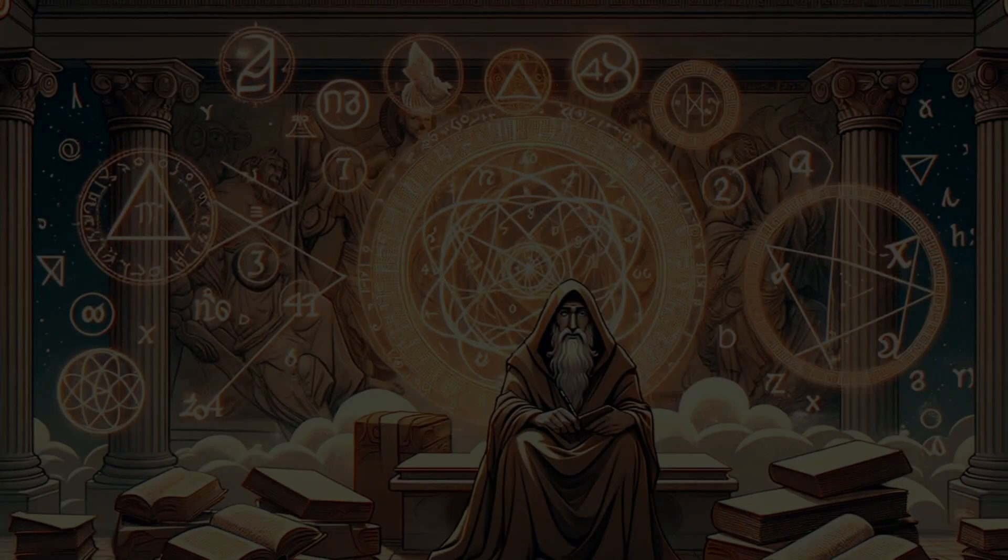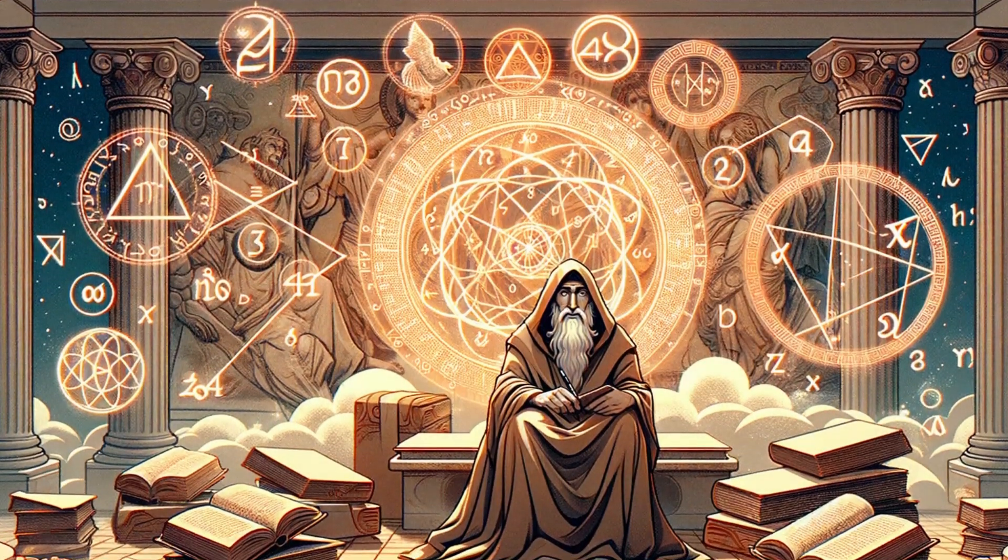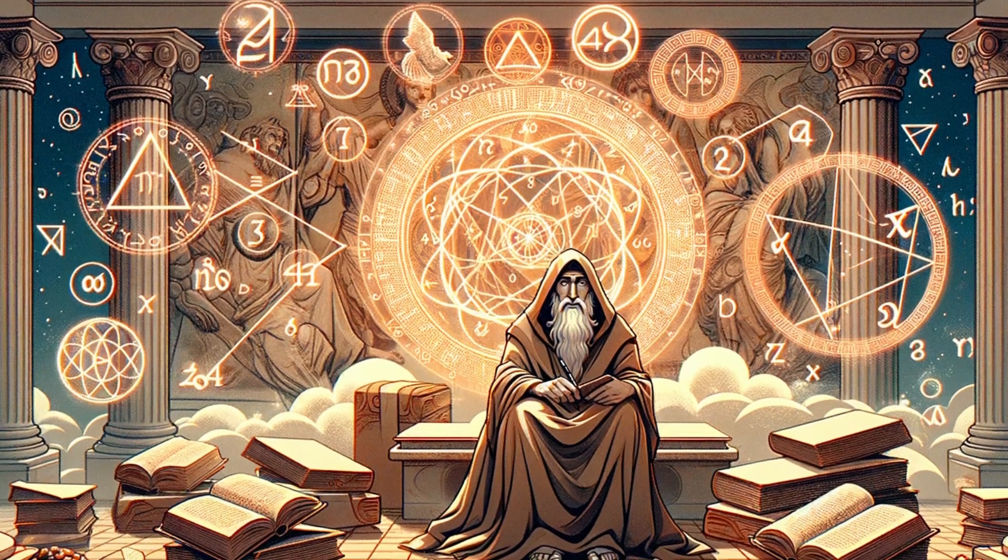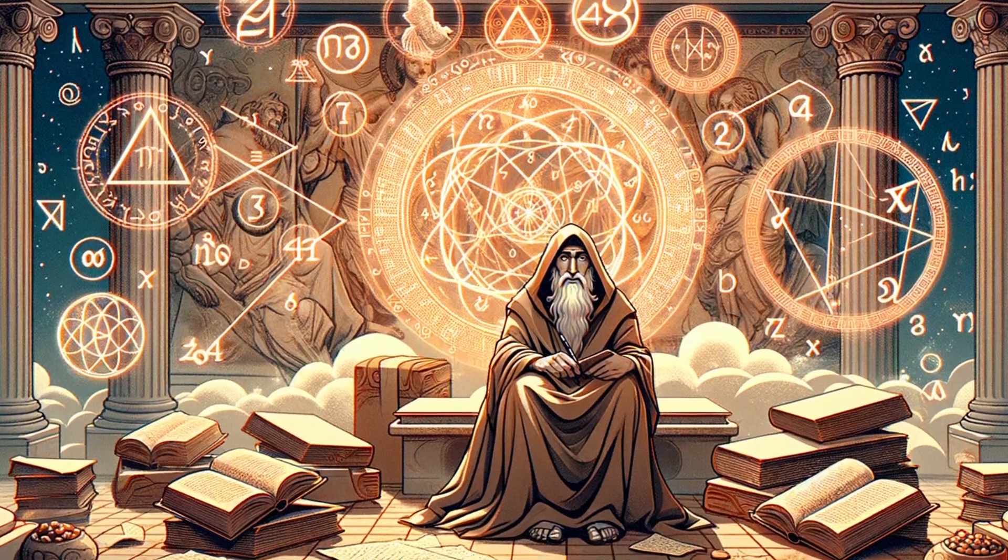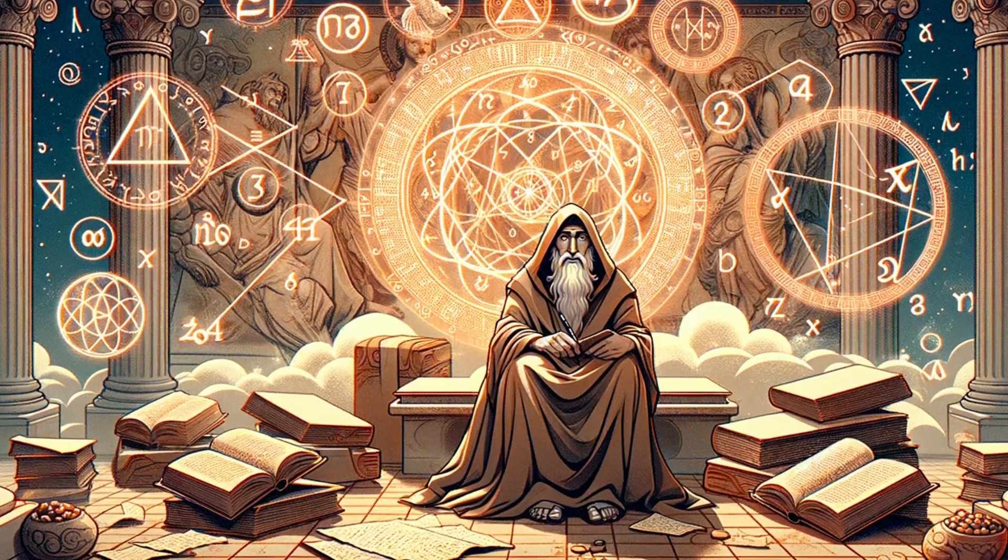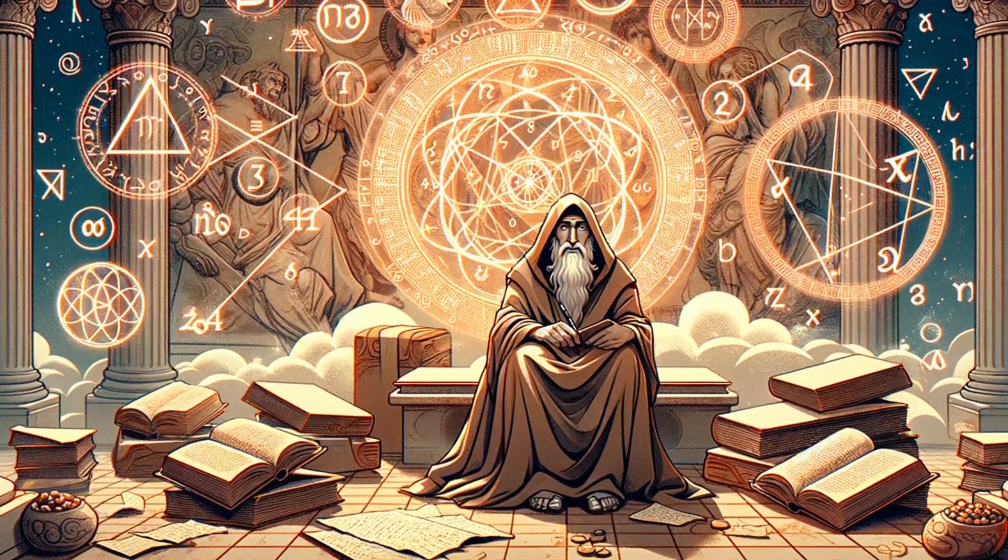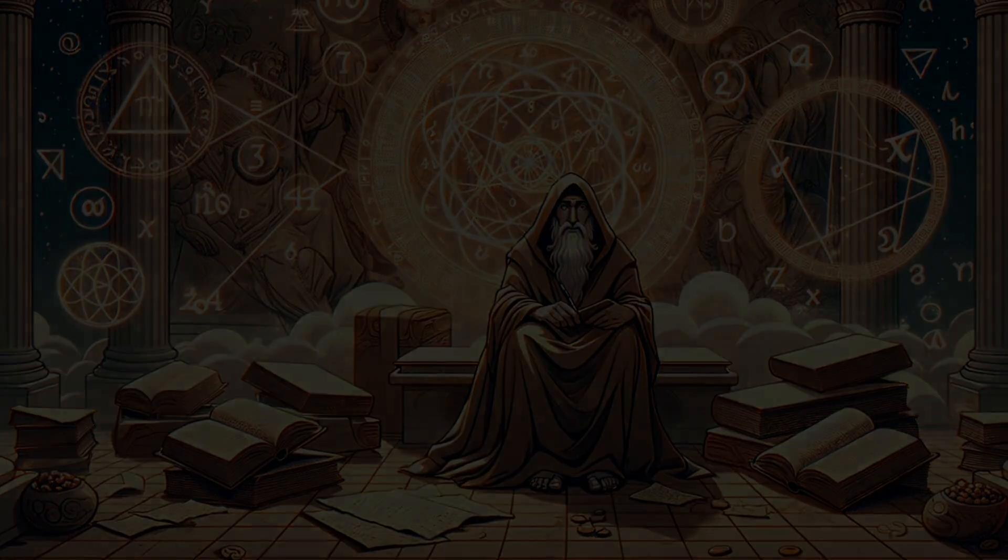Our story begins over two millennia ago with Pythagoras, a visionary who saw numbers as the essence of life. This journey through time reveals how numerologists like Dr. Juno Jordan and Mrs. L.O. Dow Balliet expanded these ideas, connecting our birth dates to hidden truths about ourselves.